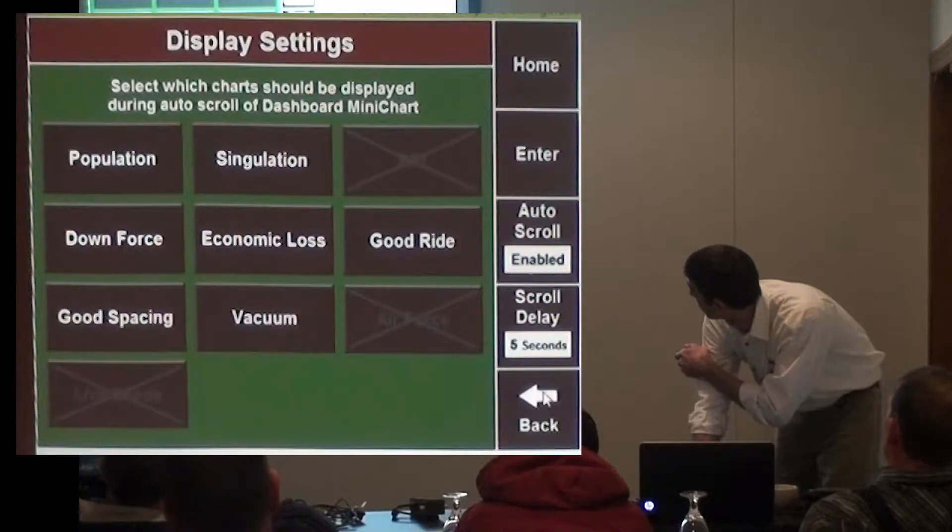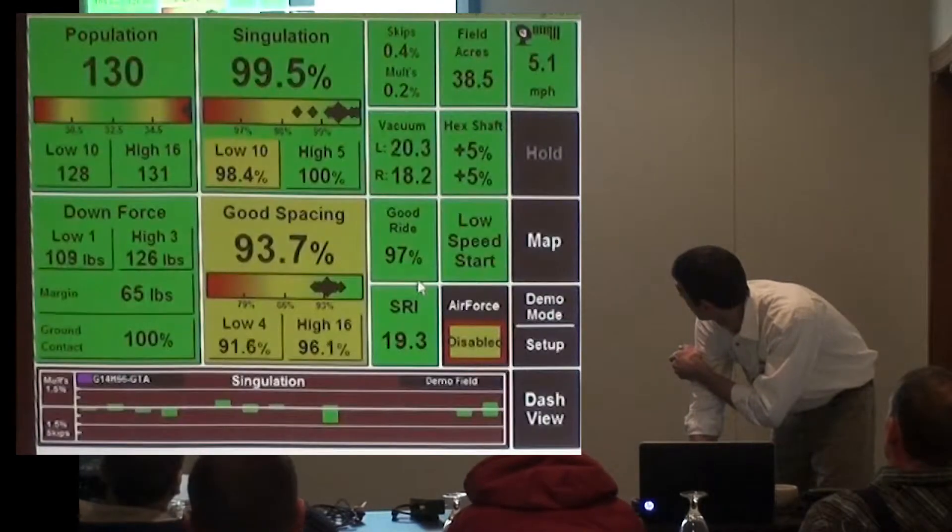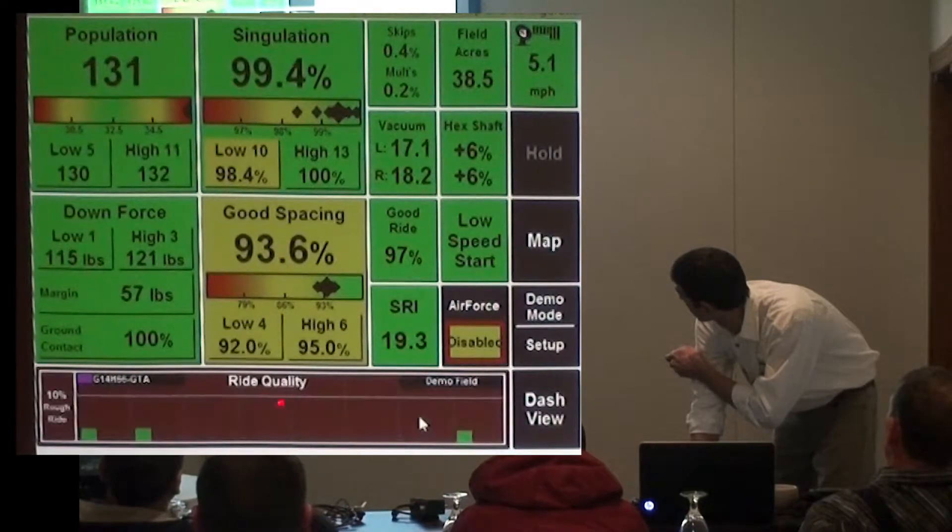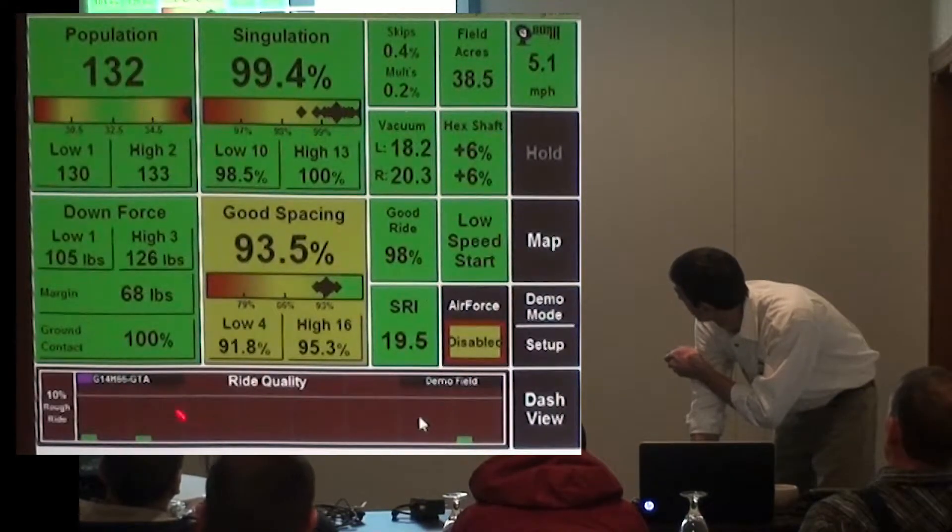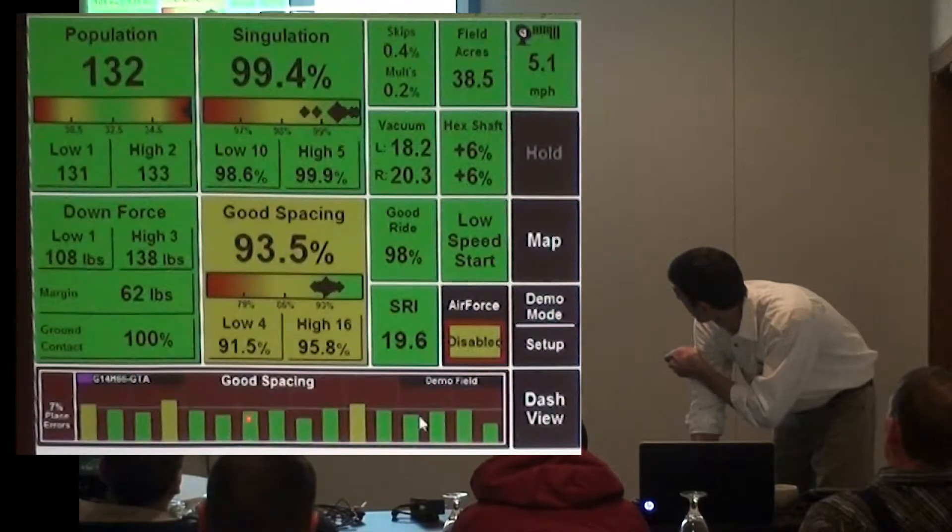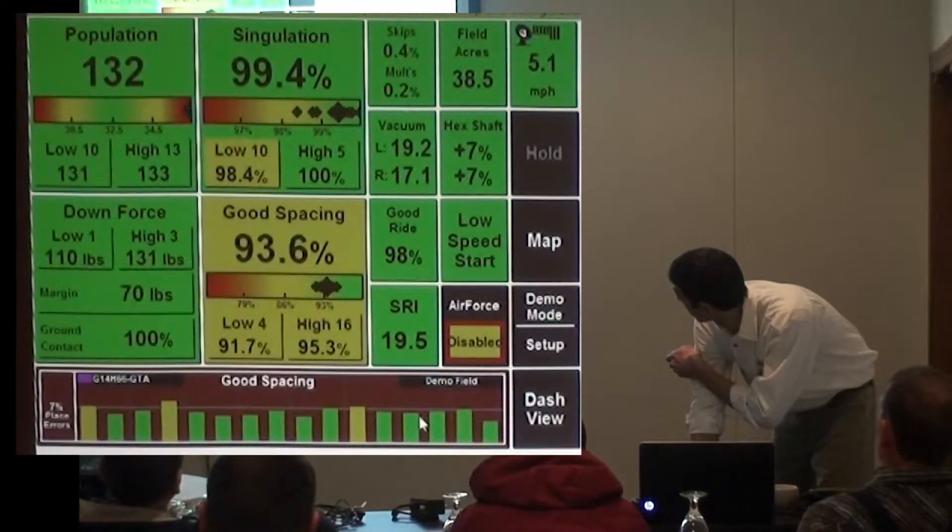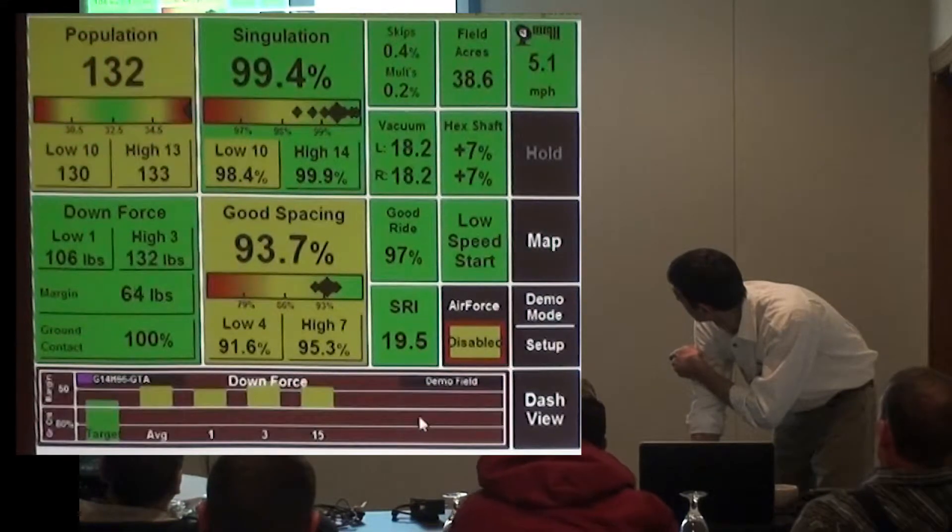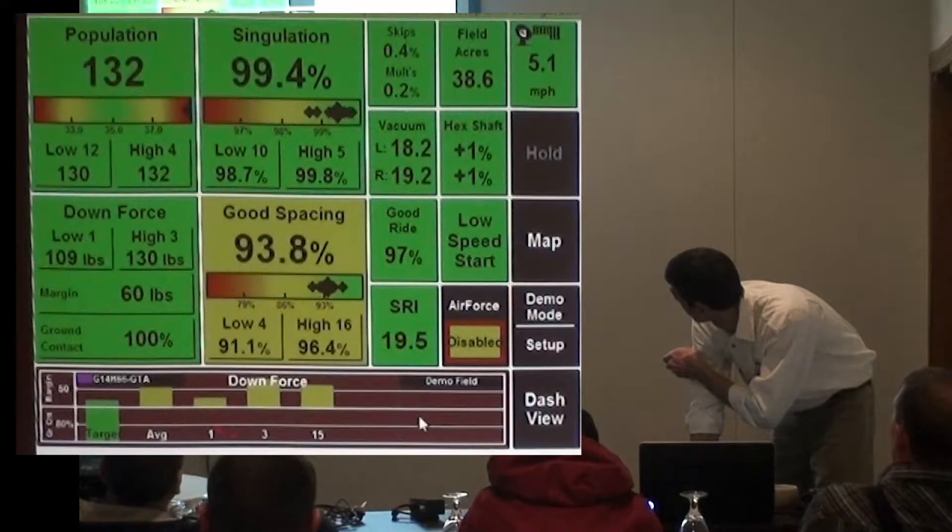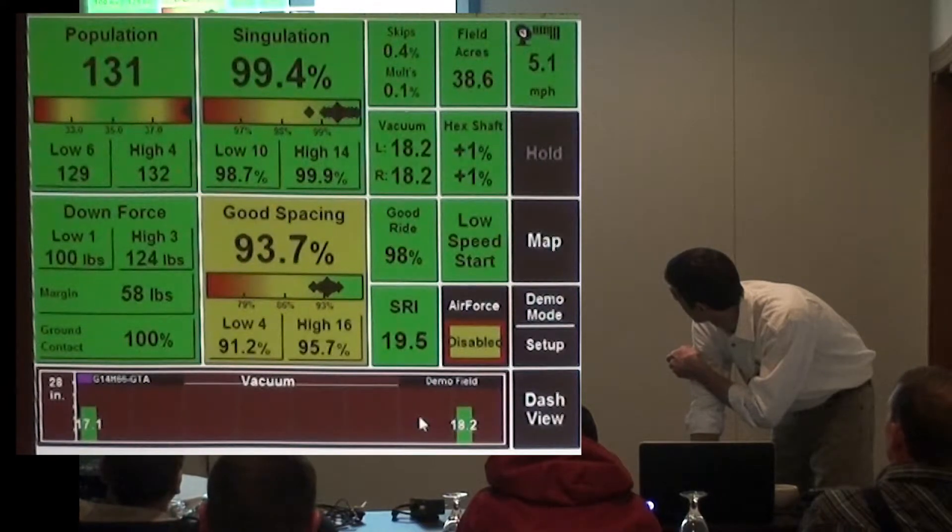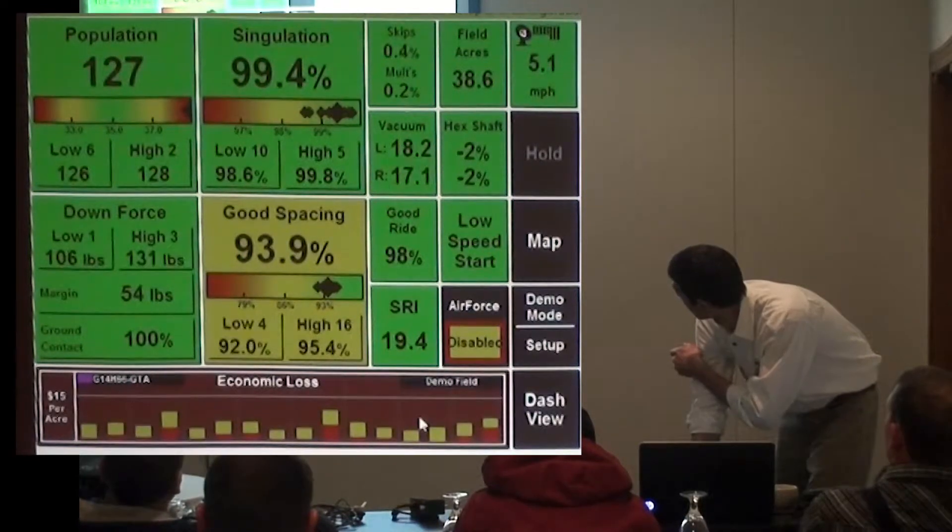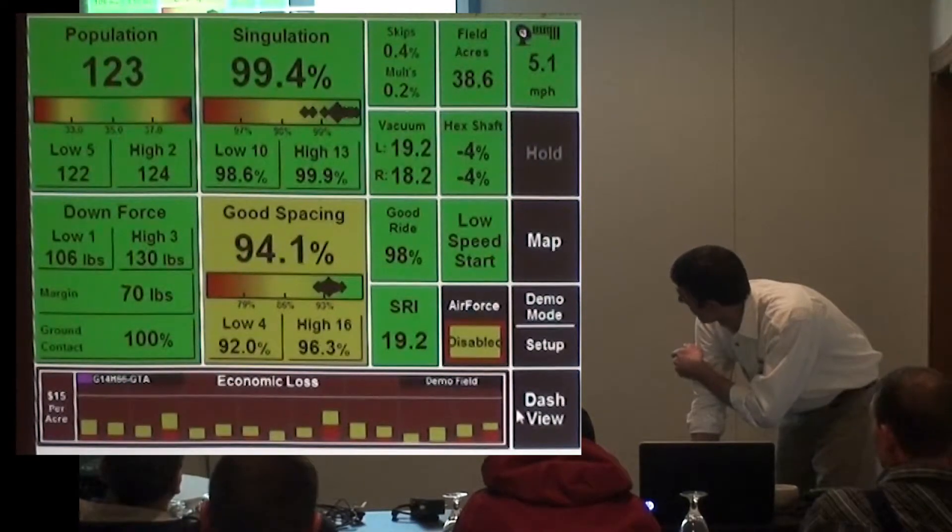After five seconds, simulation will change to ride quality. So we've got a way pin on three rows. Now it's on spacing, all 16 rows. Down force, you got your average, and then rows one, three, and fifteen had the way pins, two vacuum sensors, and so forth. You get the idea.